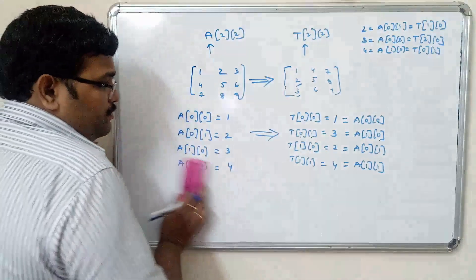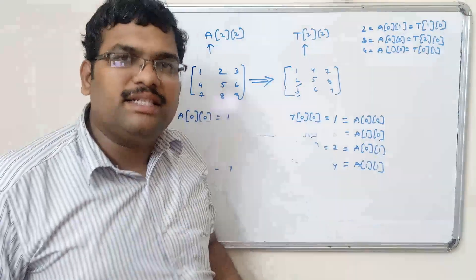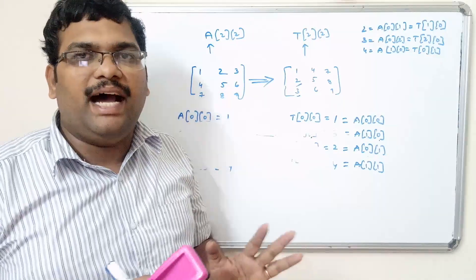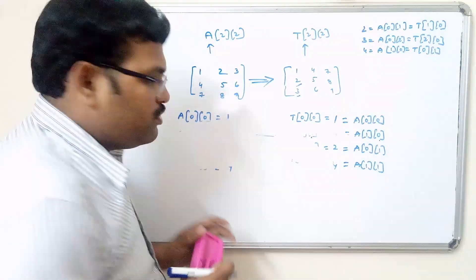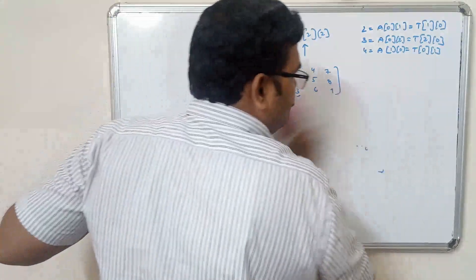So for any square matrix, just replacing i and j in the index will give the transpose. Now let us write the program.